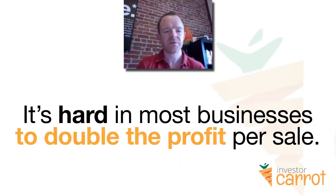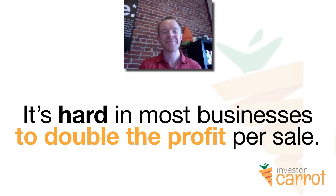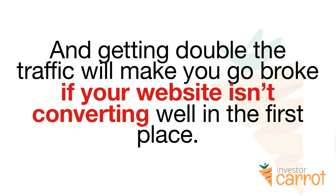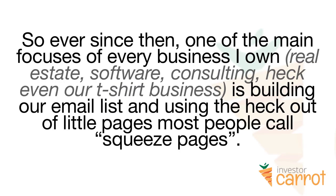It's really hard in most businesses to double the profit per sale. In real estate, if your average deal is $5,000, $10,000, or $20,000 in profit — can you tomorrow come up with some strategy to double that? Maybe, maybe not. And getting double the traffic could make you go broke if your website isn't already converting well. So I found out the easiest way to double my business was to double the amount of leads I took in each month, and a great way to do that is by making your website convert better — which I'll talk about in video three. We use lead pages: specific little pages that help you convert traffic into leads.